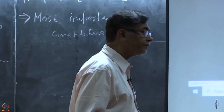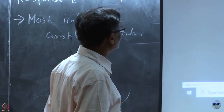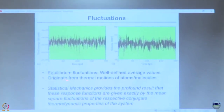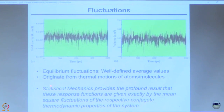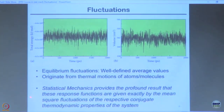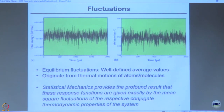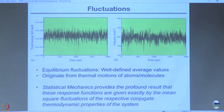This is a natural fluctuation. Equilibrium fluctuations around defined average values originate from thermal motion of atoms and molecules. It is a profound result that the response functions I have discussed — specific heat, compressibility, susceptibility — are given exactly by mean square fluctuations of their respective conjugate thermodynamic properties.